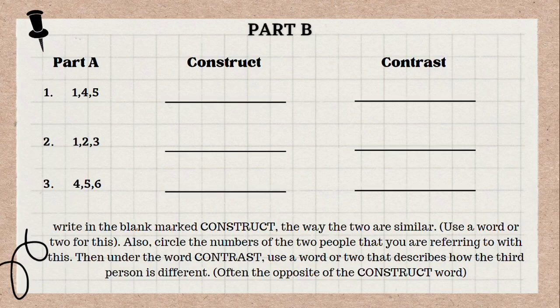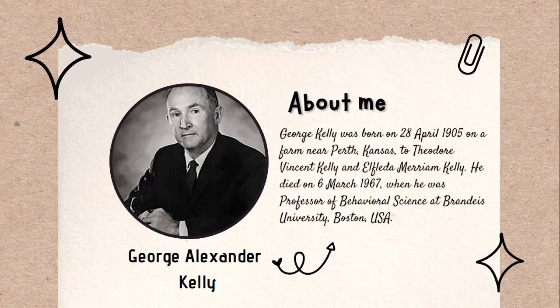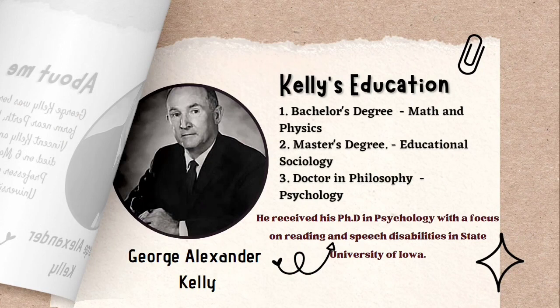To formally start our discussion, we have here a brief background about George Alexander Kelly. George Kelly was born on the 28th of April 1905 on a farm near Perth, Kansas. George's father was Theodore Vincent Kelly and his mother was Elphida Miriam Kelly. George died on March 6, 1967, when he was a professor of behavioral science at Brandeis University, Boston, USA.